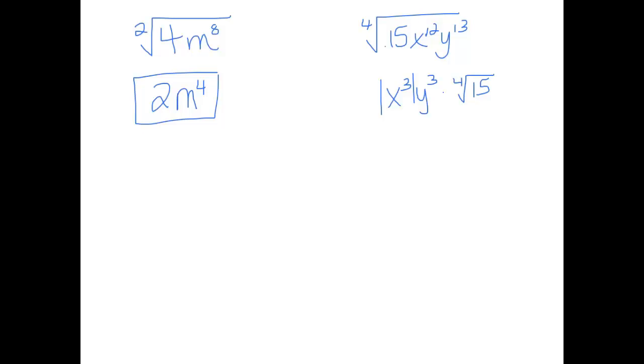Just like that. We said y to the 13th is really going to be split up into y to the 3rd. That's like taking the 4th root of y to the 12th. And you're going to have an extra y left over. Well, I'm not going to take the 4th root of that and simplify it. I'm just going to leave it inside the 4th root there. So that's what our answer would be. So part of it has an absolute value. Parts of it don't.